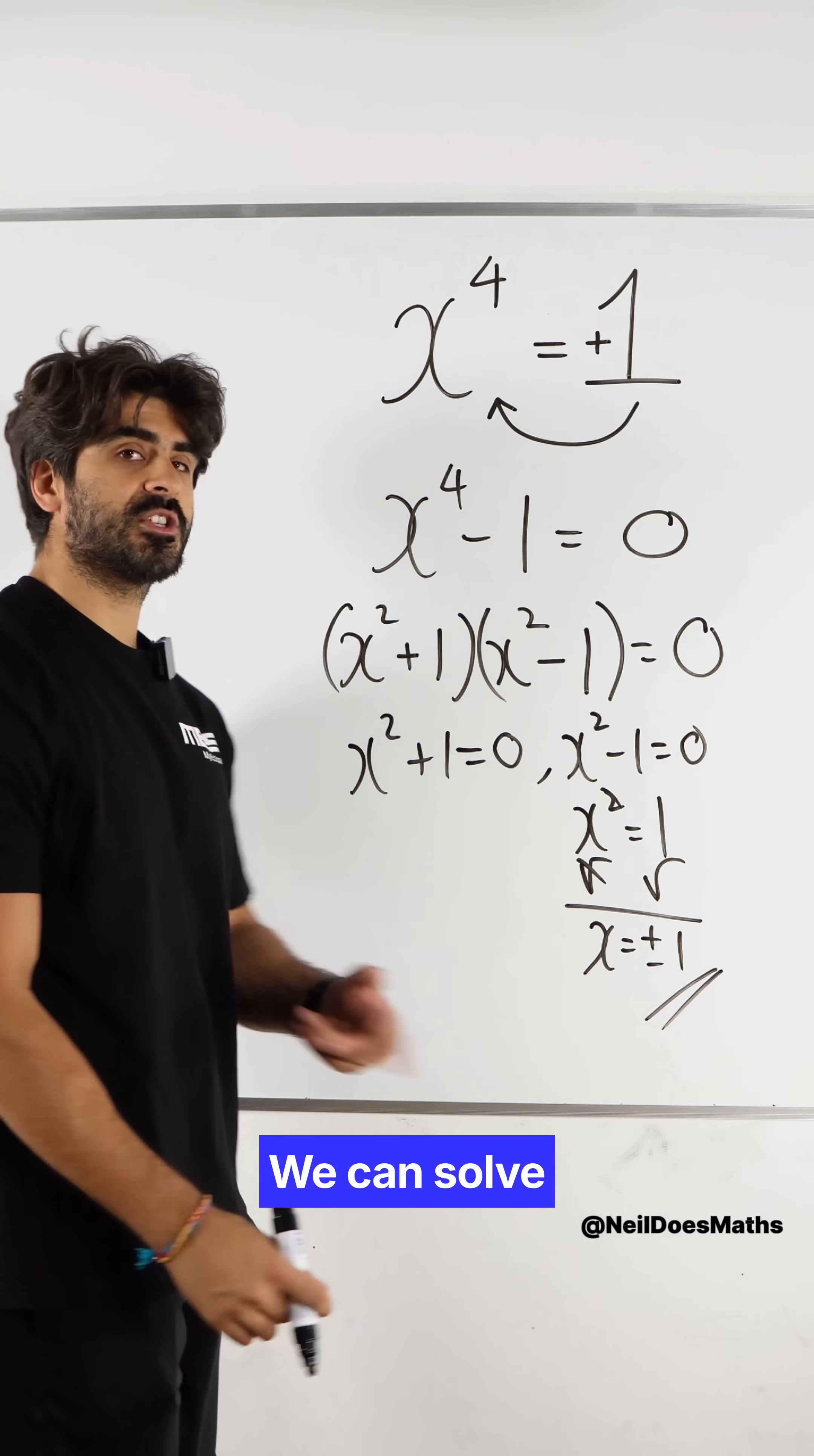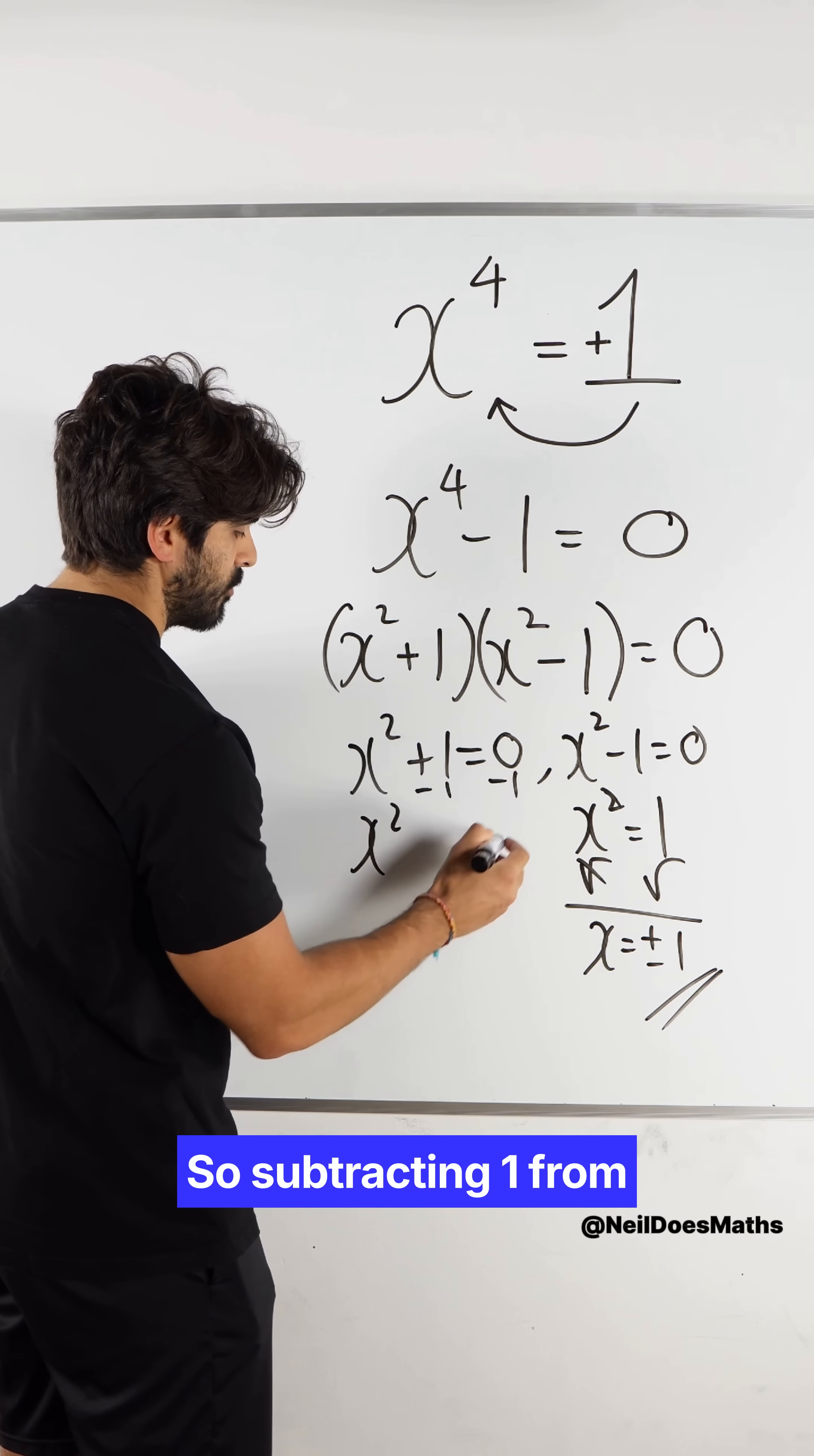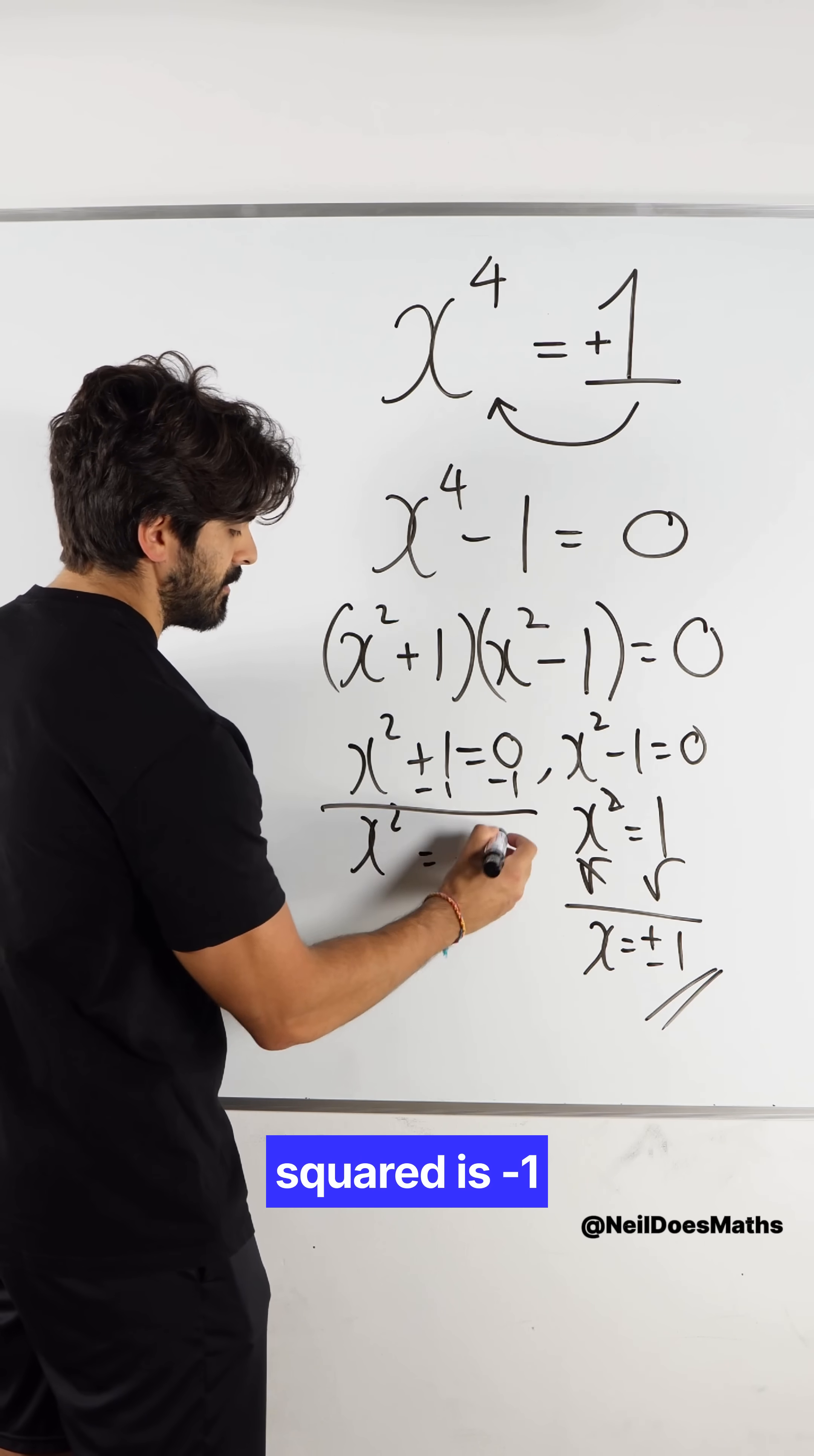But what about this one? We can solve this as well. So I'm going to subtract one from both sides. I get x squared is minus one.